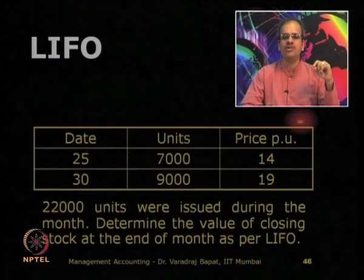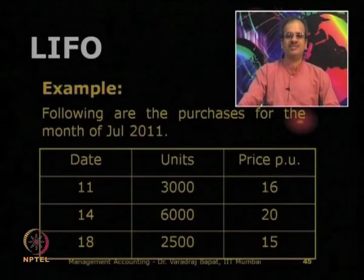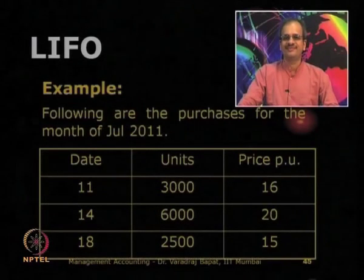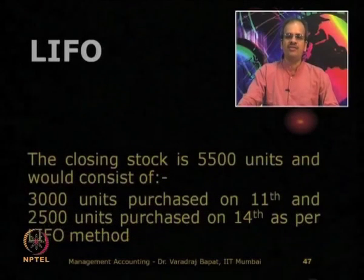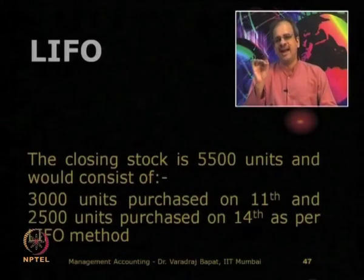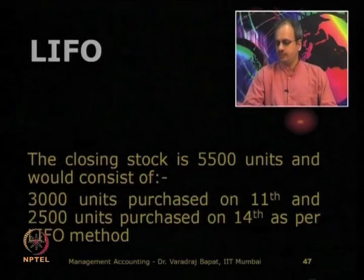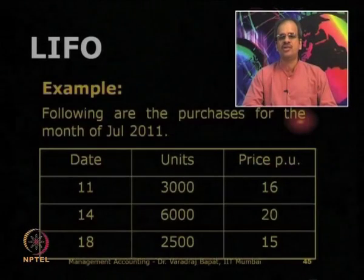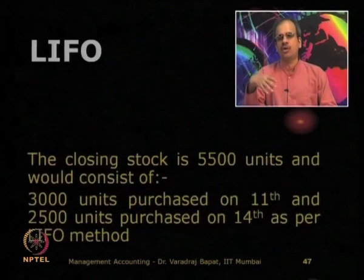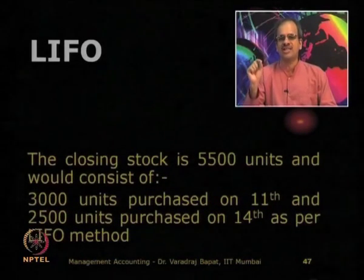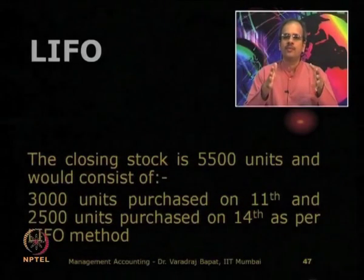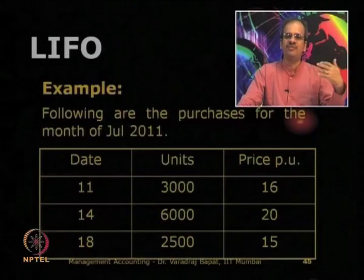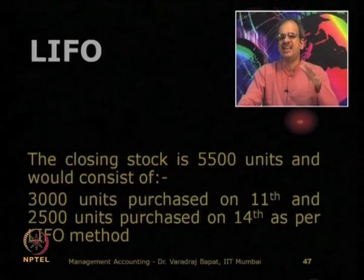We have to determine the value of closing stock. First we calculate the number of units — 5,500 units are in hand. On different dates we purchased 27,500 units, out of which 22,000 are issued. So closing stock consists of 5,500 units. In LIFO, the latest units are issued out, so the units purchased on the 30th, 25th, 18th are issued out, and the units purchased on the 14th and 11th are assumed to be on hand.